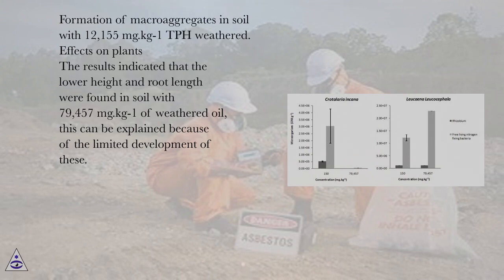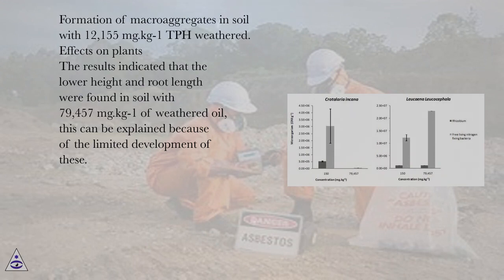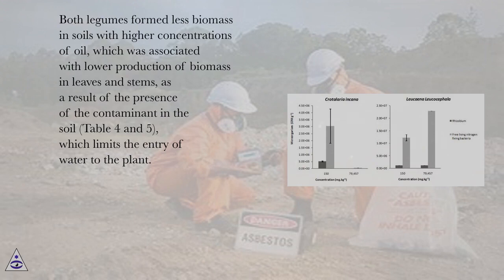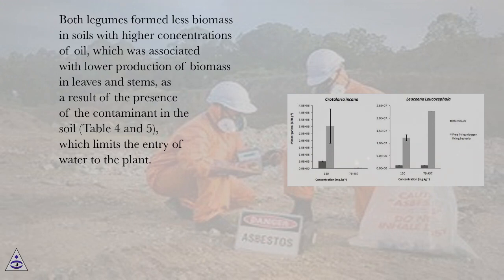Effects on Plants: The results indicated that the lower height and root length were found in soil with 79,457 mg·kg⁻¹ of weathered oil. This can be explained because of the limited development of these. Both legumes formed less biomass in soils with higher concentrations of oil, which was associated with lower production of biomass in leaves and stems, as a result of the presence of the contaminant in the soil (Tables 4 and 5), which limits the entry of water to the plant.